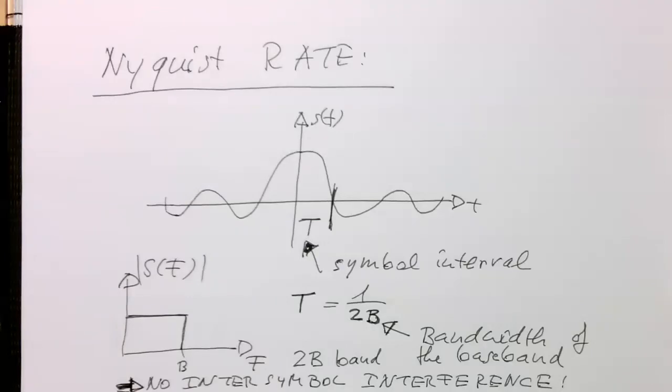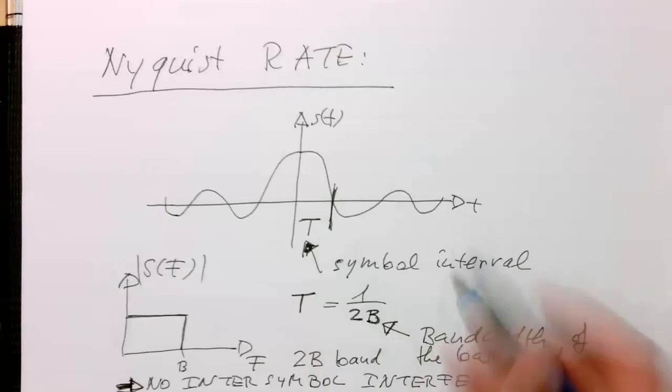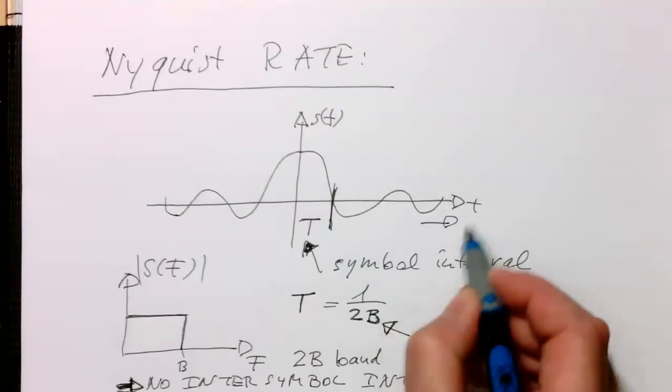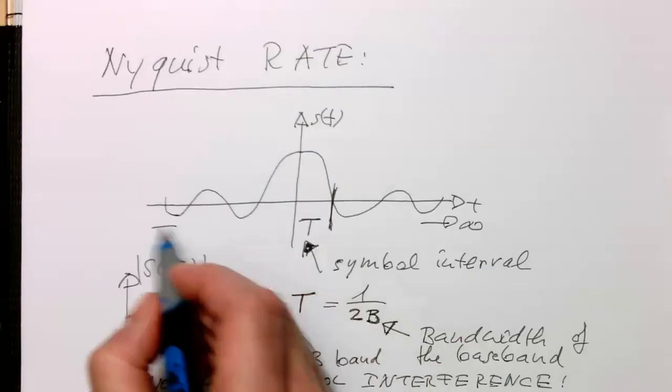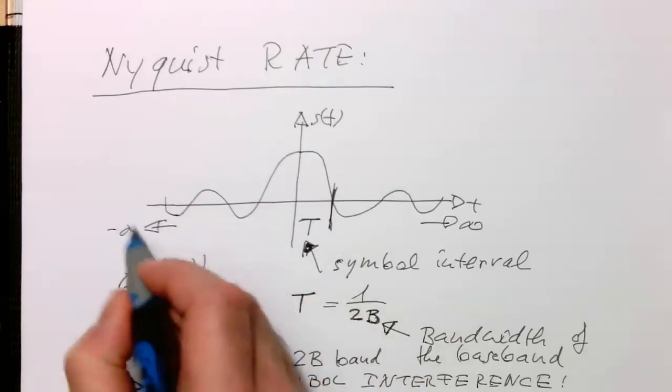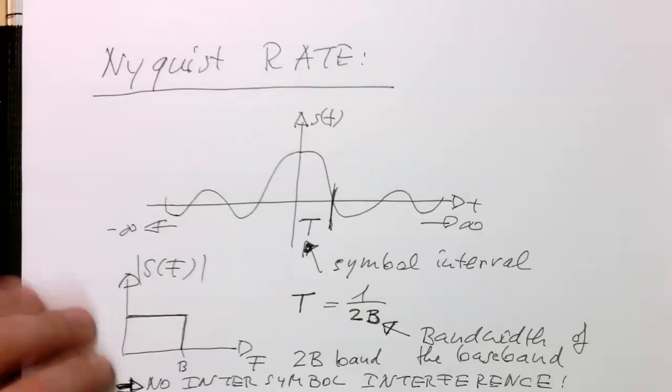Now, the other problem is that this still runs to positive infinite time and also runs to negative infinite time. Therefore, this is still not realistic. What we need to do is the next step: we need to basically limit the time, how long this symbol lasts.